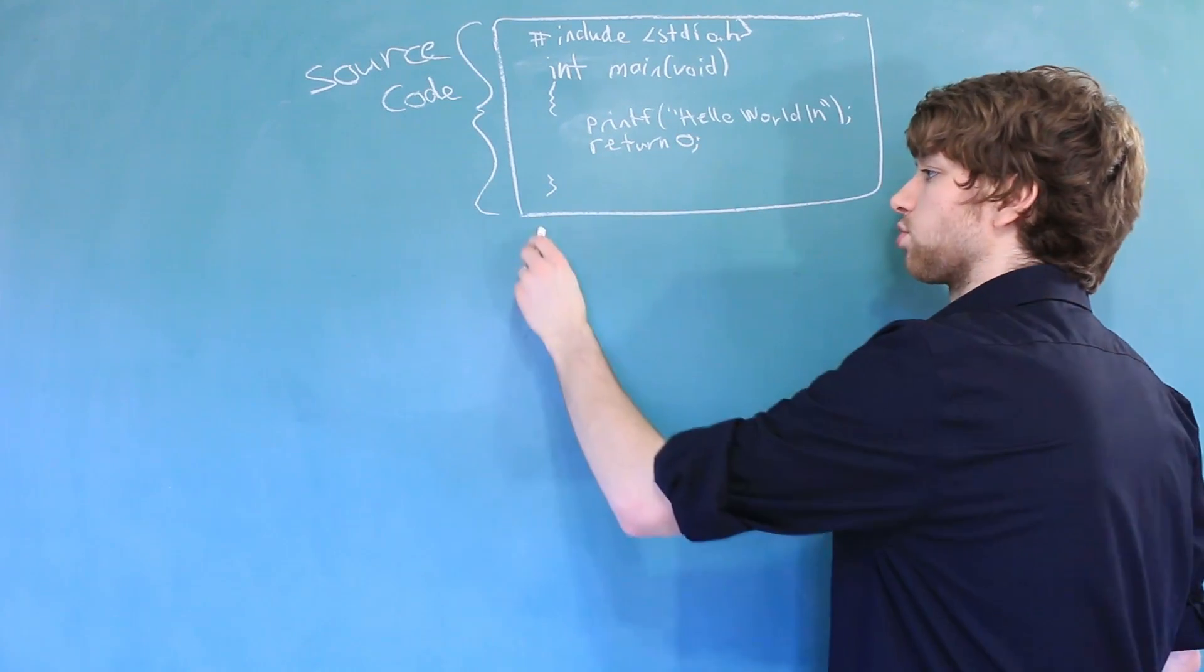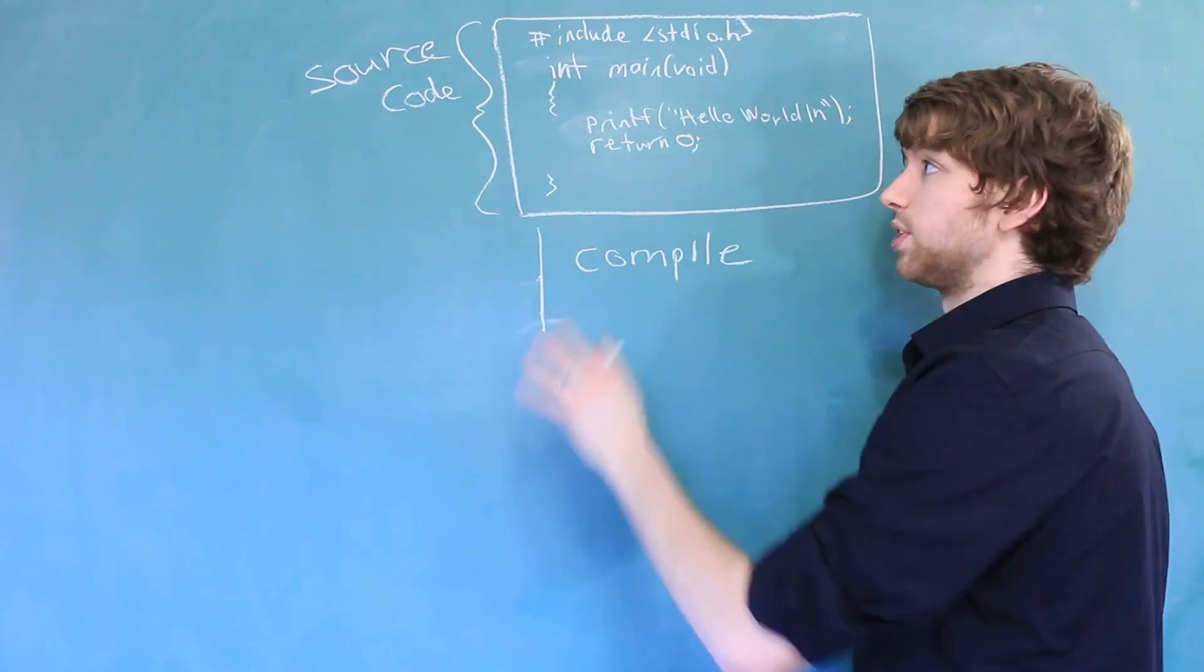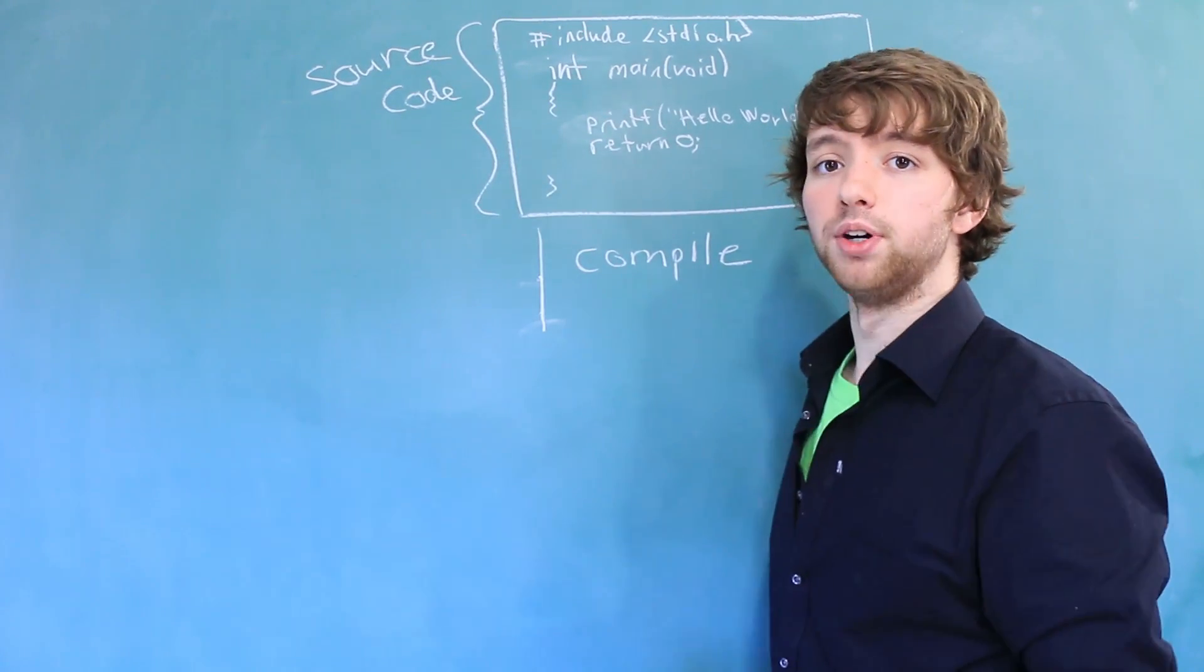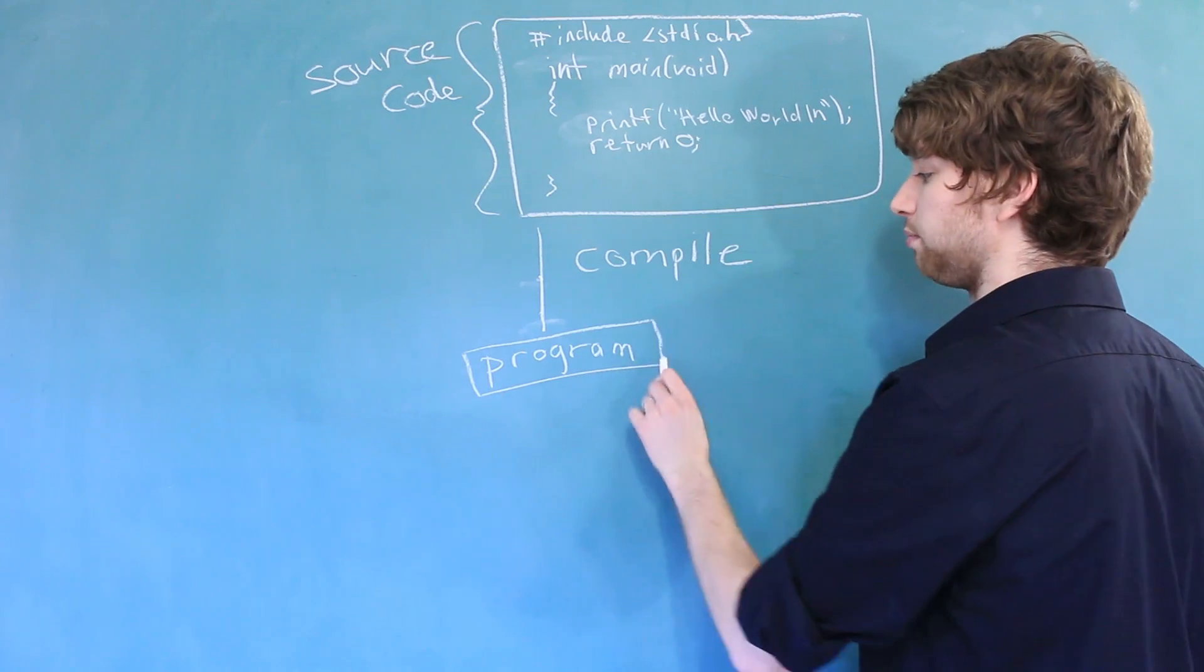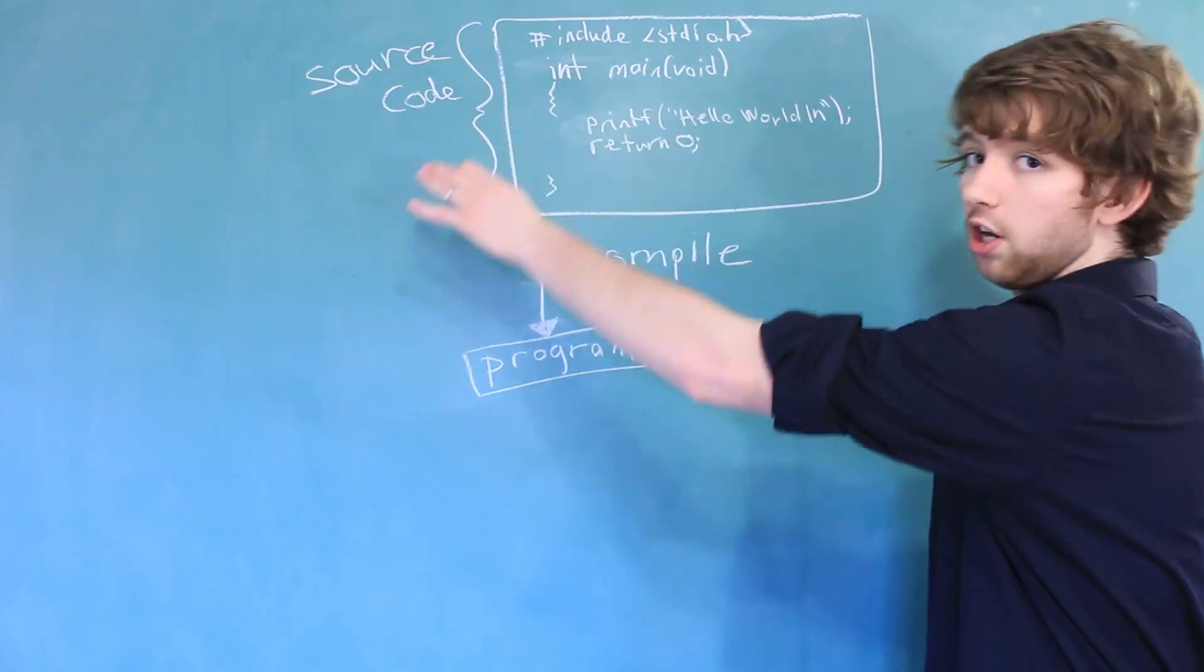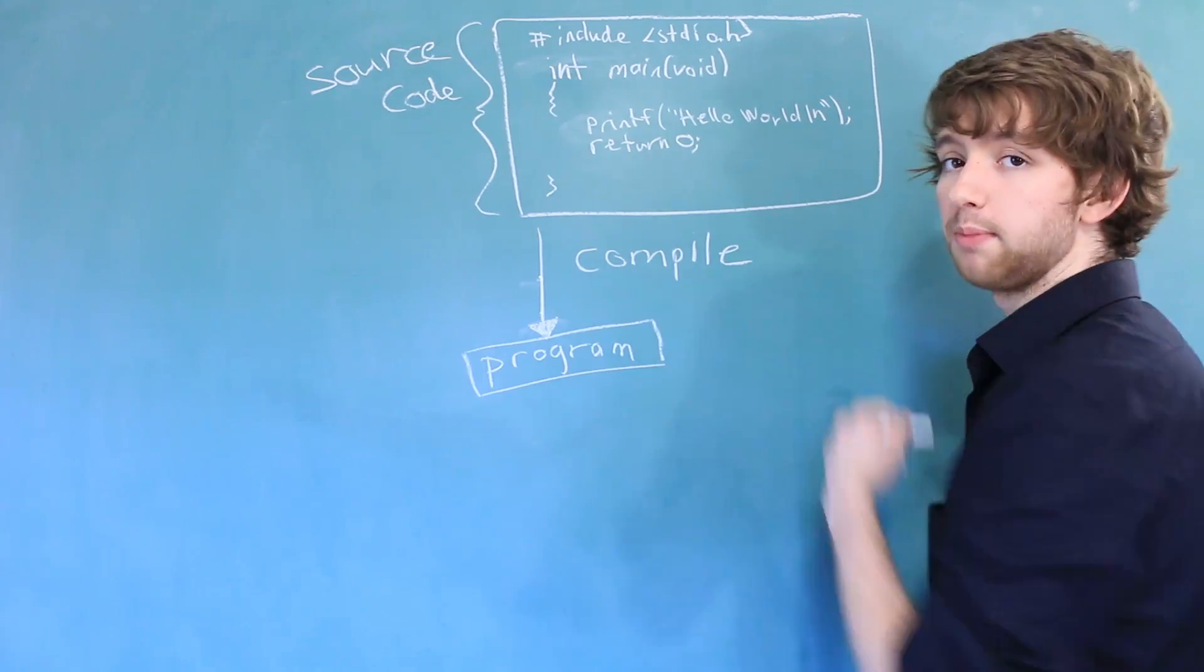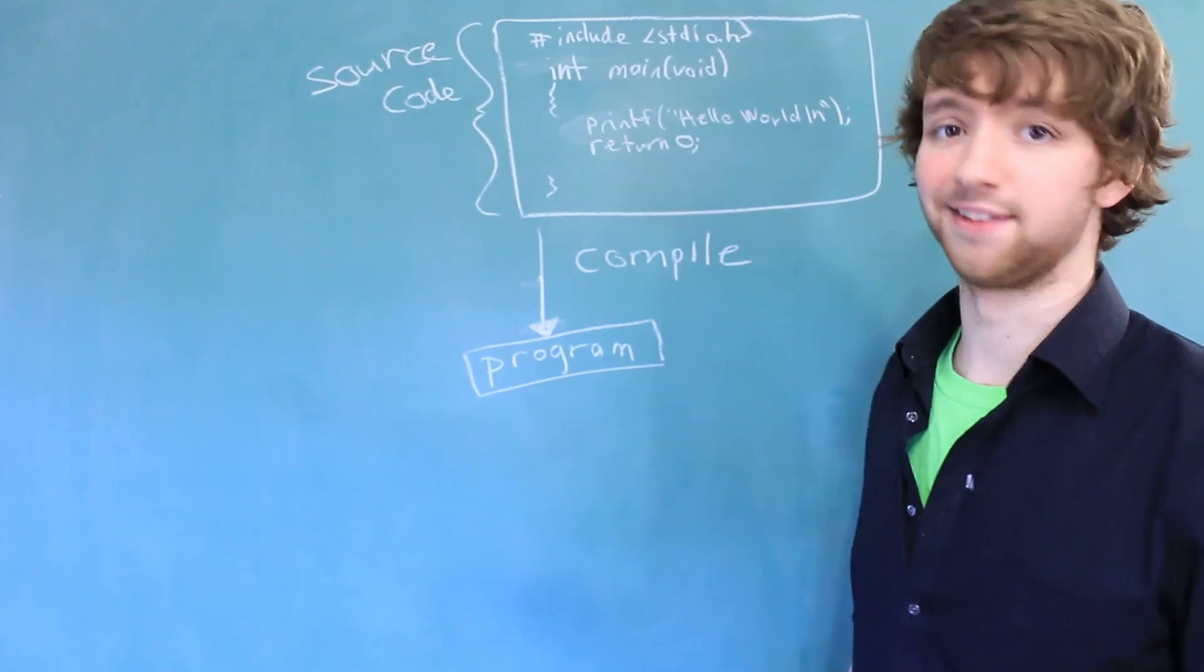After we type out our source code, we have to compile that source code. Once we take the source code and compile it, the output is an executable program. This program is something that the computer can understand. In this series, we are going to learn how to write all of the code, how to compile it, and how to make all kinds of super cool programs that can do all kinds of fascinating things.